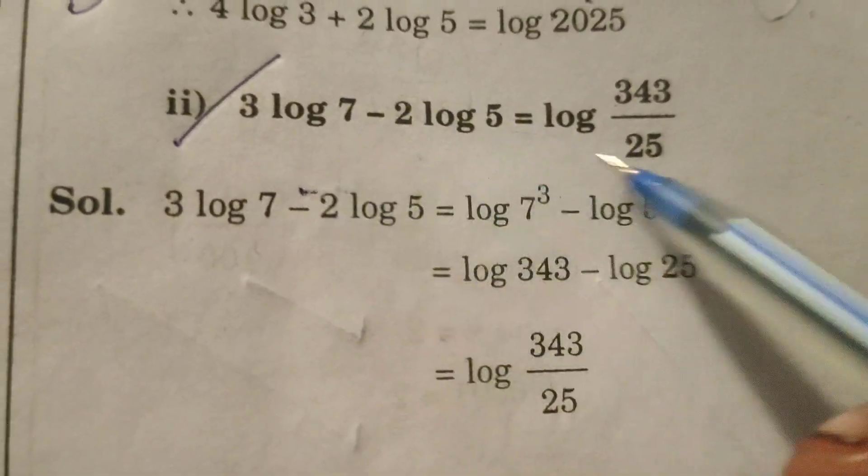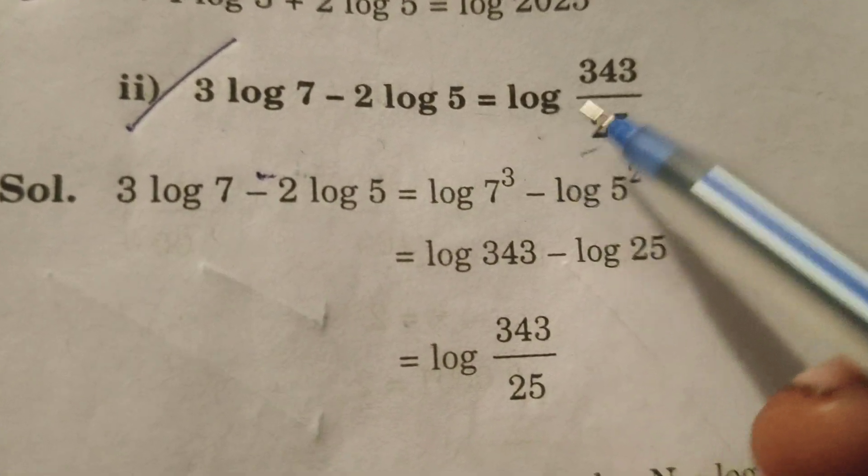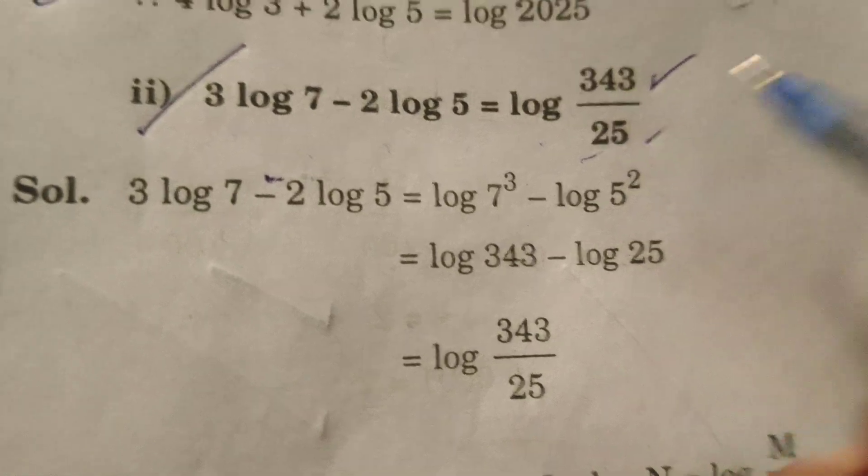This is Dr. Aethi. Now today we are going to solve this logarithmic problem: 3 log 7 minus 2 log 5 equals log of 343 by 25.